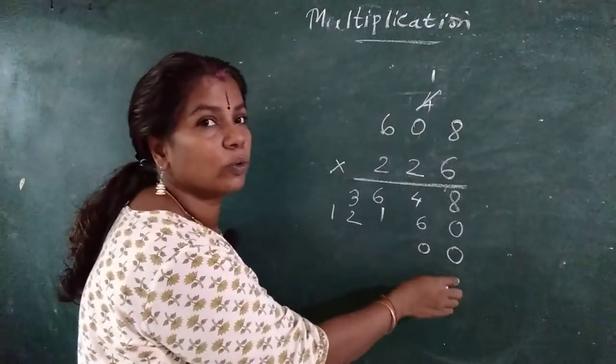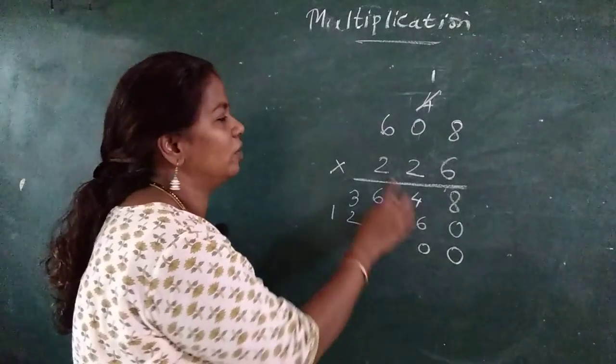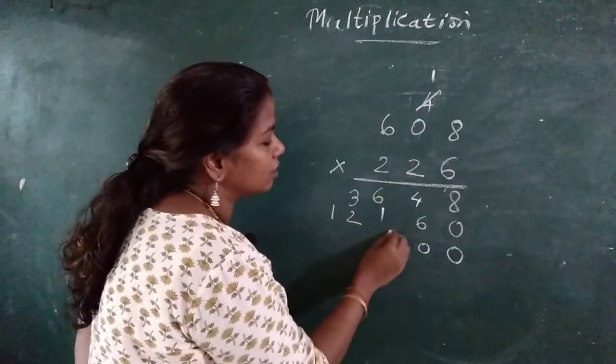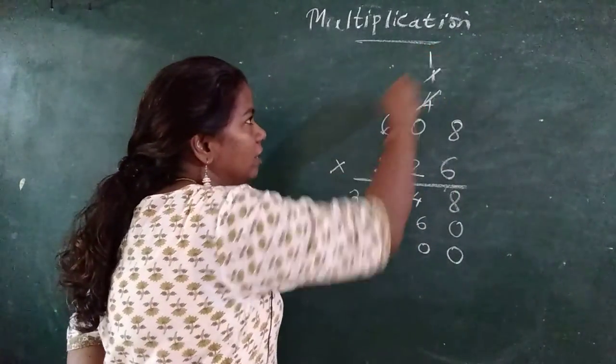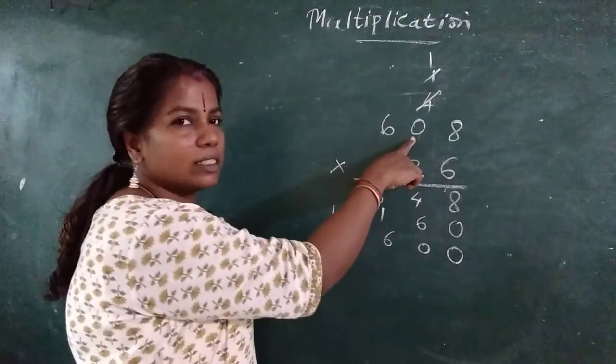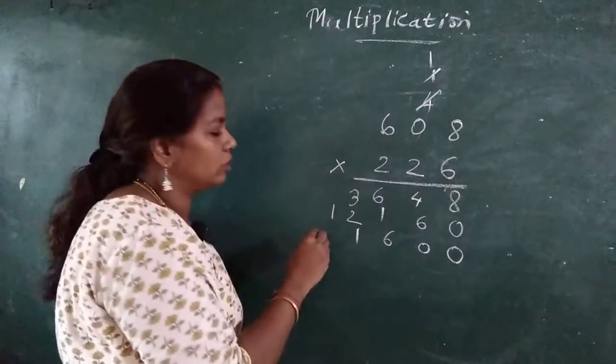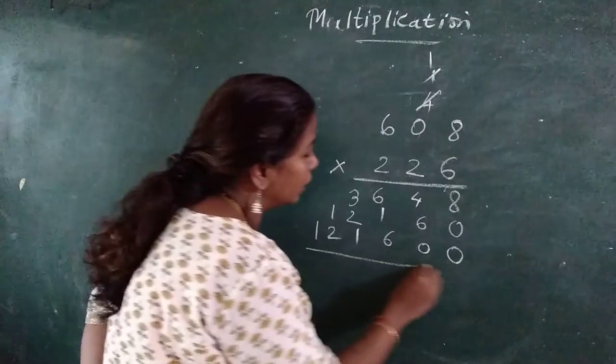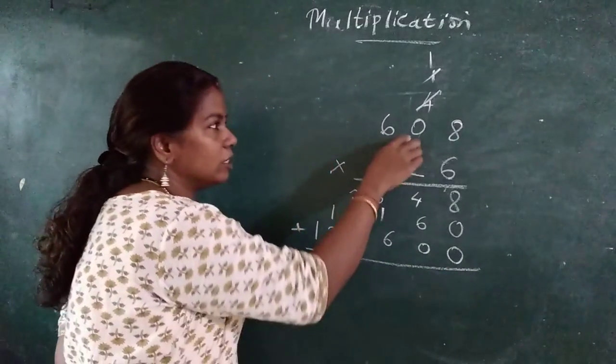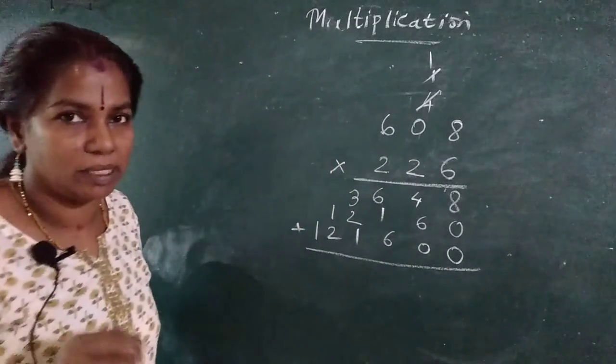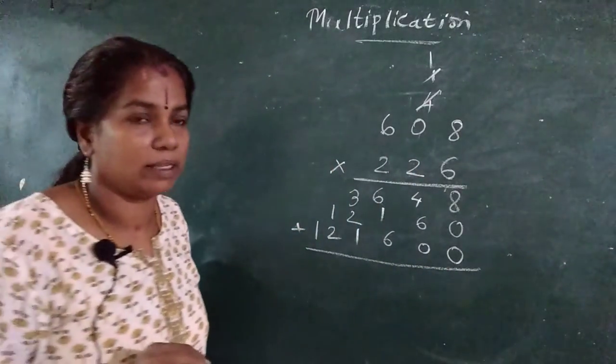Then what you will do? 2, 0. Very good. 2, 8's are 16. 6, 1 carry. 2, 0's are 0, plus 1, 1. 2, 6's are 12. I have taken purpose in this 0 in between so that you don't make mistake in that. Many students do that.